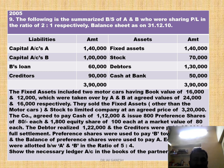The fixed assets included two motor cars having book value of Rs. 16,000 and Rs. 12,000, which were taken over by A and B at agreed values of Rs. 24,000 and Rs. 16,000 respectively.